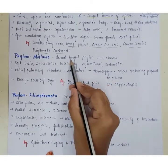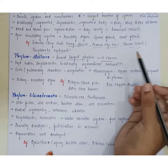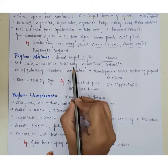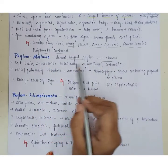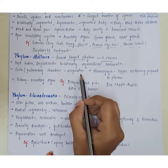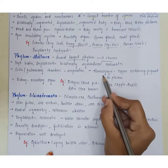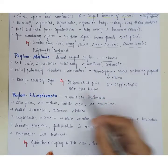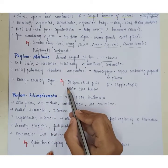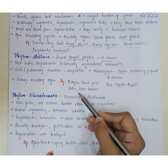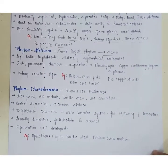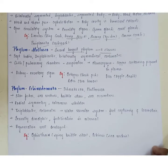Phylum Mollusca is the second largest phylum, including seven classes. Bodies are soft, triploblastic, bilaterally symmetrical, and coelomate. They contain gills or pulmonary chambers for respiration using hemocyanin, a copper-containing pigment. Kidneys serve as excretory organs. Examples include Octopus (devil fish), Doris (sea lemon), and Pila (apple snail).